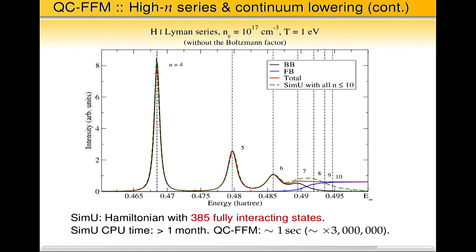And that's the result for Lyman series, hydrogen Lyman series, in modestly dense plasma, 10 to the 17 particles per cubic centimeter, one eV temperature. And I do not put here Boltzmann, trivial Boltzmann factor for comparison. And that is the series. One calculation is done with this QC FFM, very fast method that took about one second. The other calculation is computer simulation. I actually believe it one of the most computer simulation of line shape ever done. That's almost 400 fully interacting states and it took about one month on today computer. So the speed factor if you use this simple analytical expression is about three millions. And you see how nicely they compare.